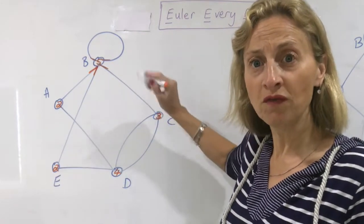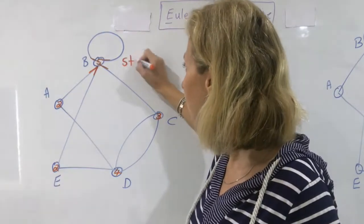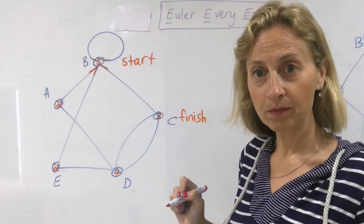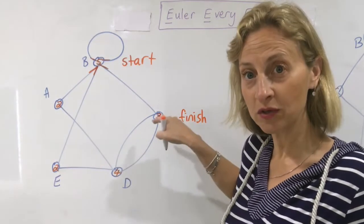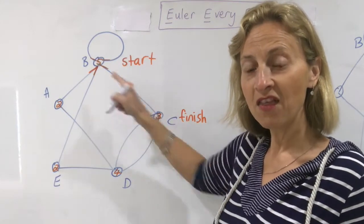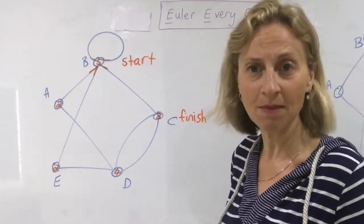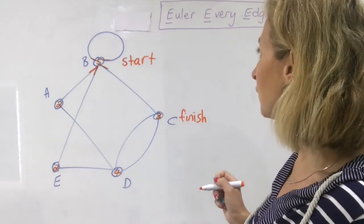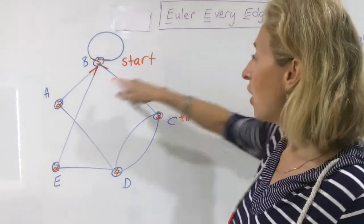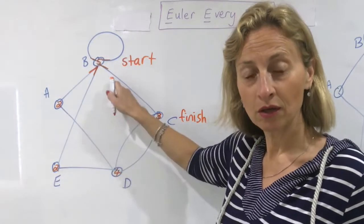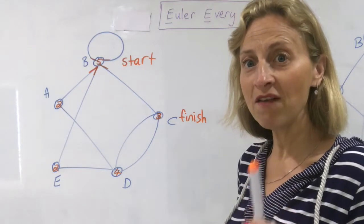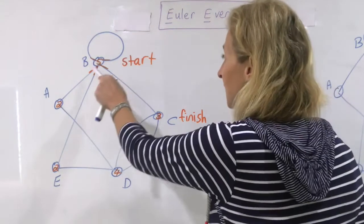Those two odd vertices must be my start and my finish. So you have to do this first: label the degrees, count that there are exactly two odd ones, then label each of those as your start and finish — it doesn't matter which is which. Now I have to Euler every edge — I need to get through every edge of my network. I can go through the vertices more than once, but I have to get through every edge to get from the start to the finish.